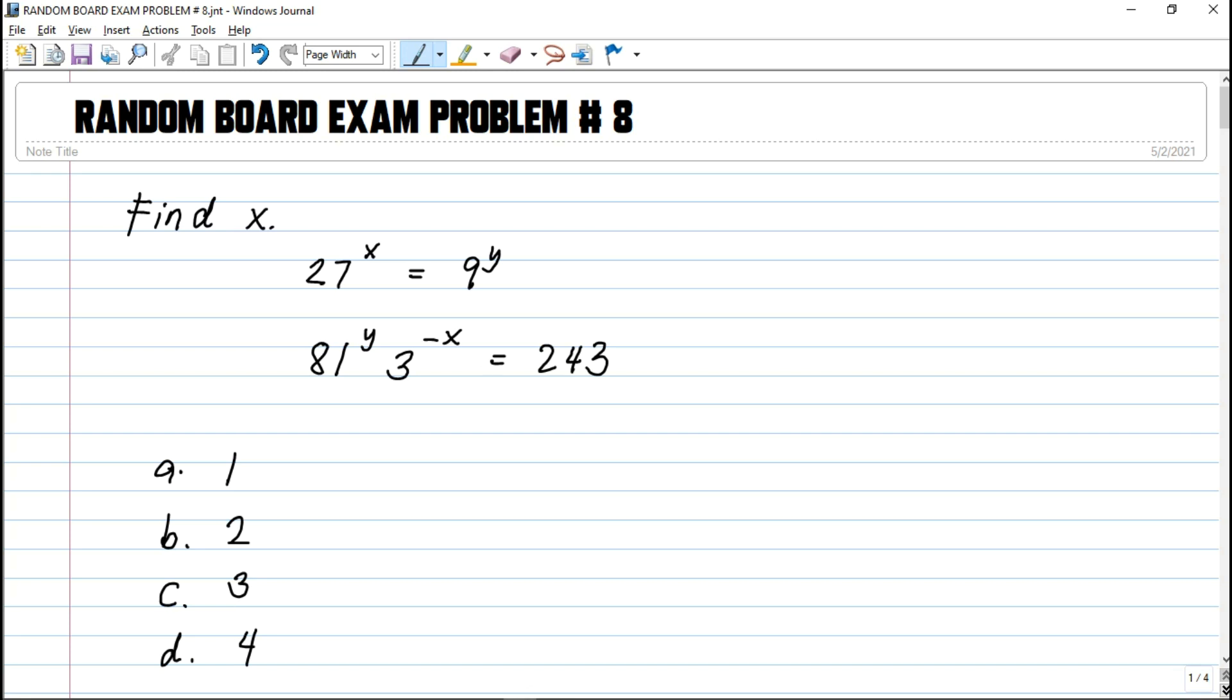In this problem guys, binigyan tayo ng dalawang equation, dalawang unknown. Find x daw. So, 27 raised to x equals 9 raised to y. The other equation is 81 raised to y times 3 raised to negative x is equal to 243. Hanapin natin yung value ng x.